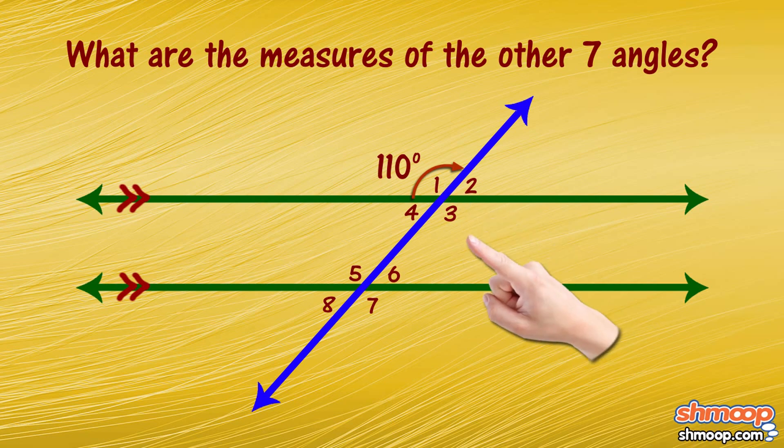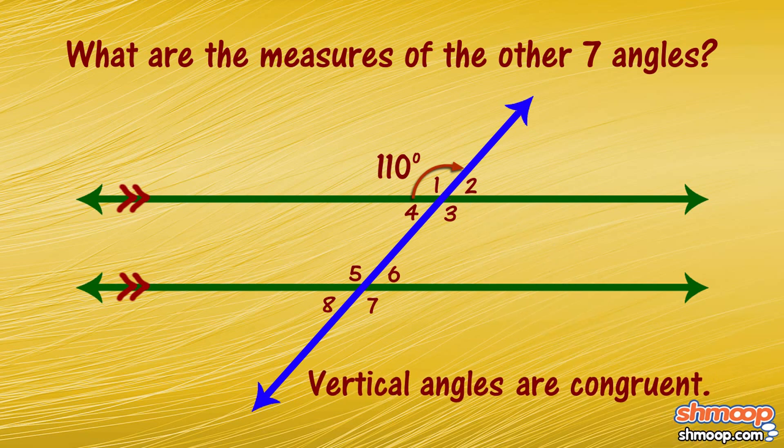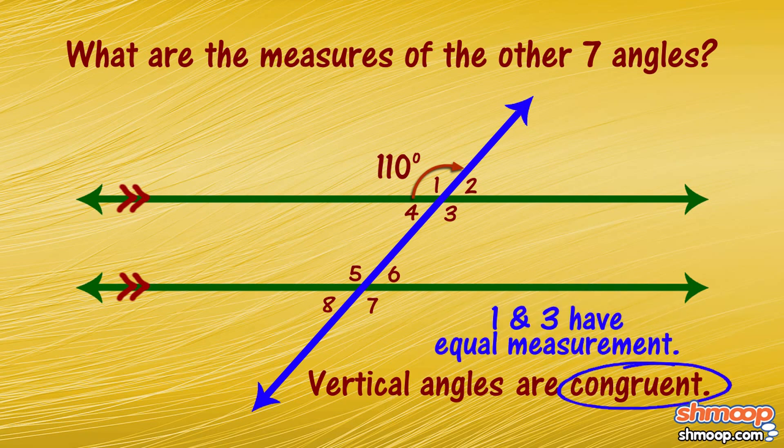First, we can see that angles one and three are vertical angles, and we know that vertical angles are always congruent. In other words, they have equal measurements. So angle three has a measure of 110 degrees.